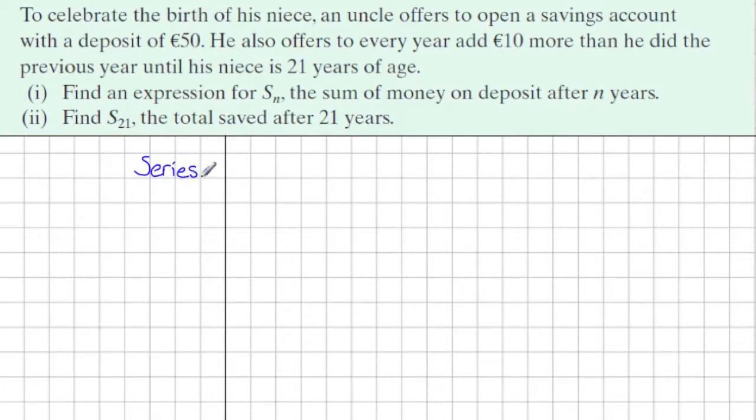Now the first term is 50 euros. That's A is 50 euros. So write this down. And he also offers every year to add 10 euros more to this. So the second year it will be 60 euros, third year 70 euros, 80 euros, etc. So this is the series.